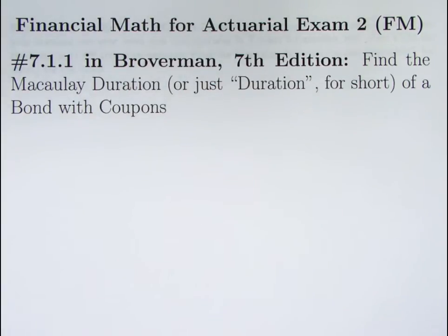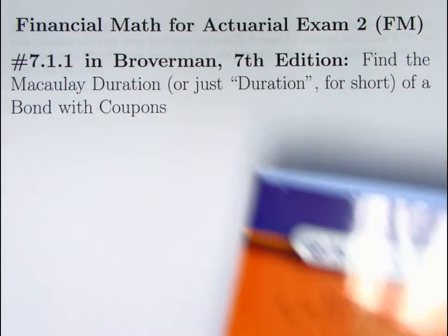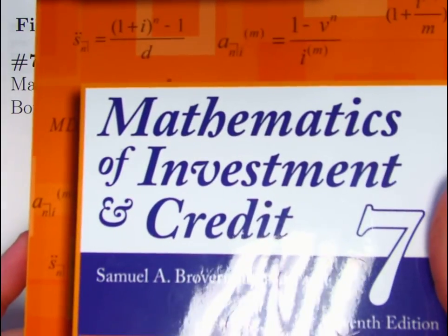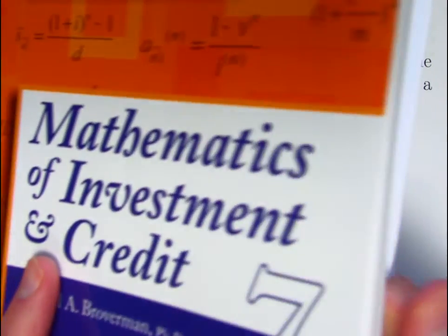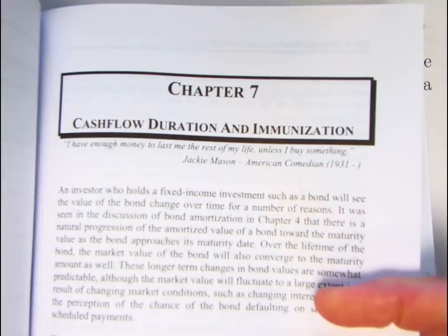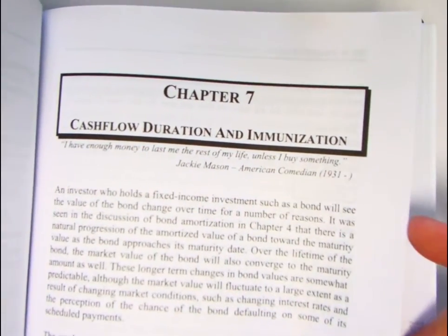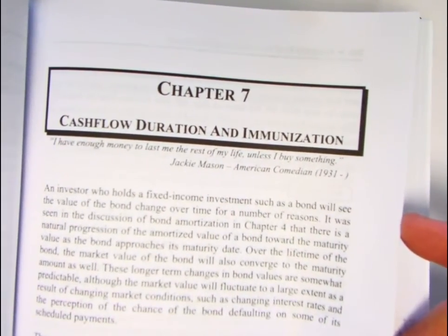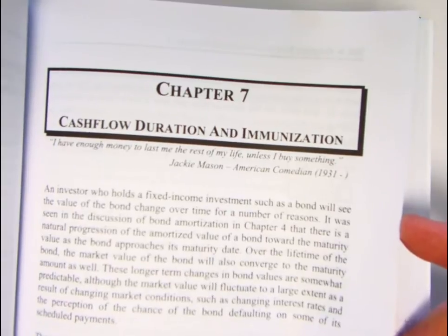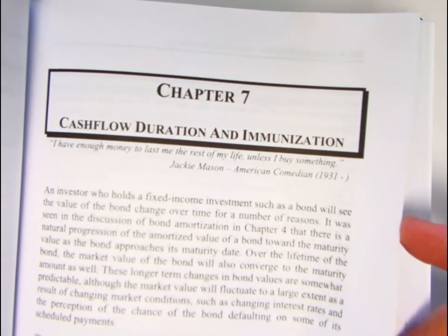Hi. Many people on my YouTube channel here in July of 2018 have been clamoring for this subject. In this video, the 148th video on Financial Math for Actuarial Exam 2, we are finally getting to the infamous Chapter 7 from the Mathematics of Investment and Credit, 7th edition. Chapter 7 being on cash flow duration and immunization, a pretty tough topic. We can get into a lot of detail here. I'm sure I'm going to do quite a number of problems from this chapter.